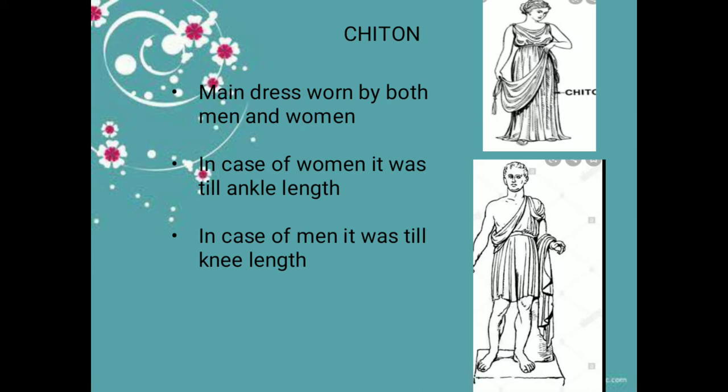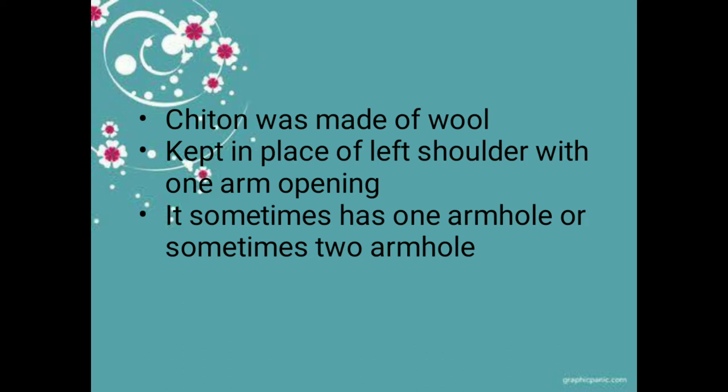Now we move to Greek costumes. The basic garment is the chiton — this is the main dress worn by both men and women. In women's case, the chiton is ankle length; in men's case, it is knee length. Chiton is made of wool and is placed on the shoulder. The fastening used is fibulae and brooches — fibulae being a kind of brooch.